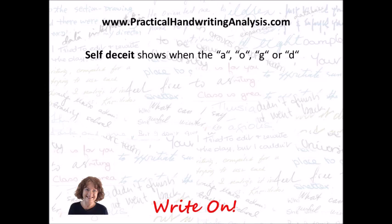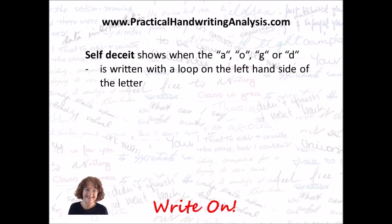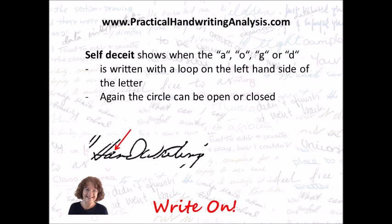Self-deceit shows where the A, O, G, or D is written with a loop on the left-hand side of the letter. D can be included in this one because it's the left-hand side, not the right. The circle can be open or closed. In the example shown, the A has a loop on the left showing self-deceit. The D is open with no loop, so that's not showing self-deceit. In the word 'hand,' we see self-deceit in the A with a loop on the left-hand side.